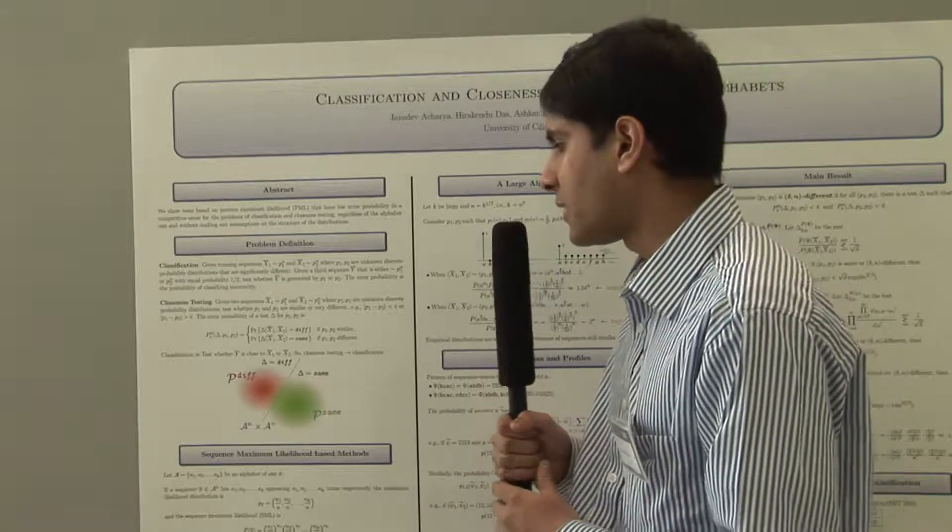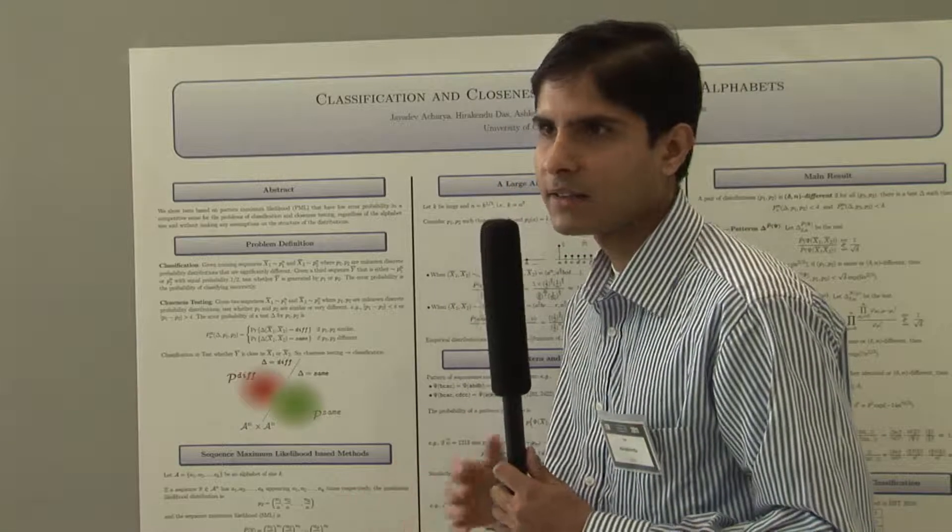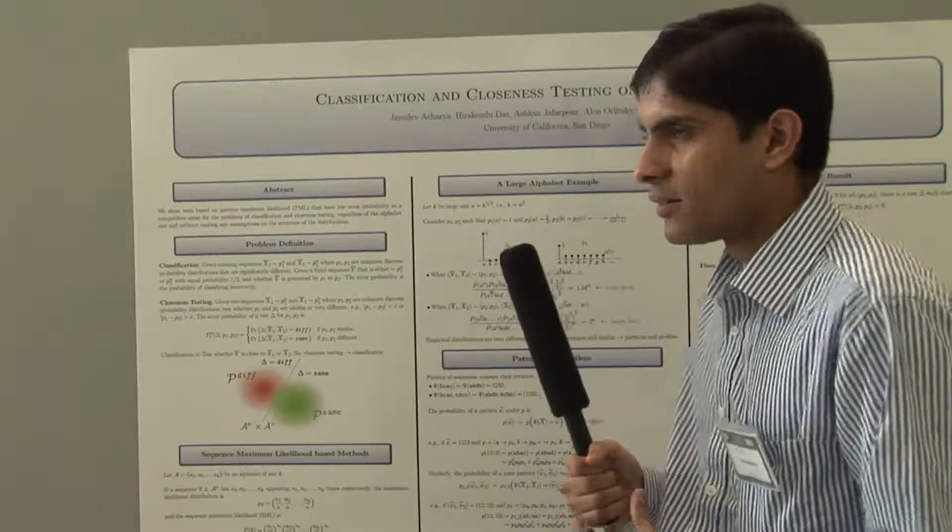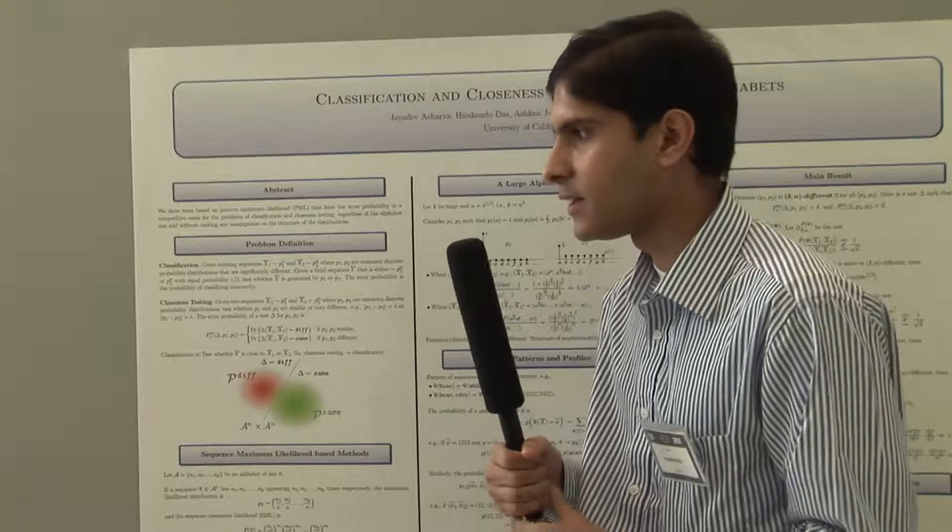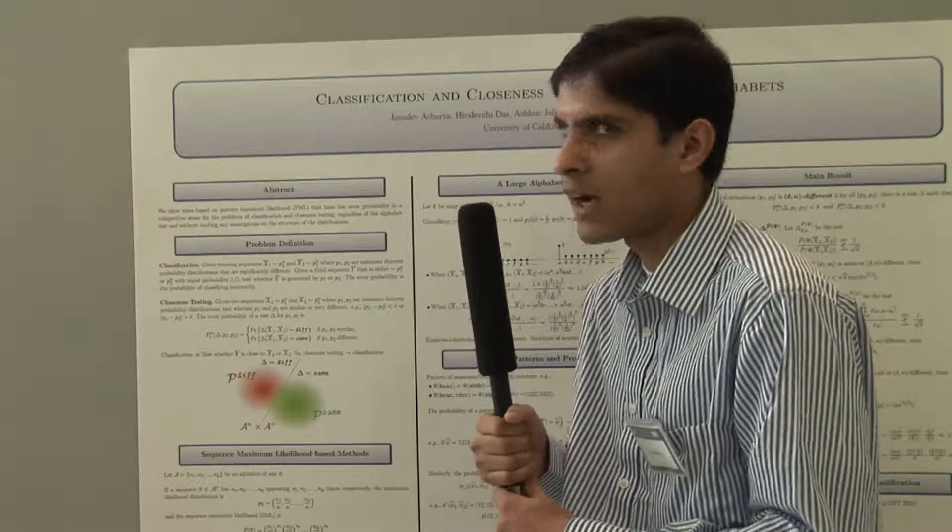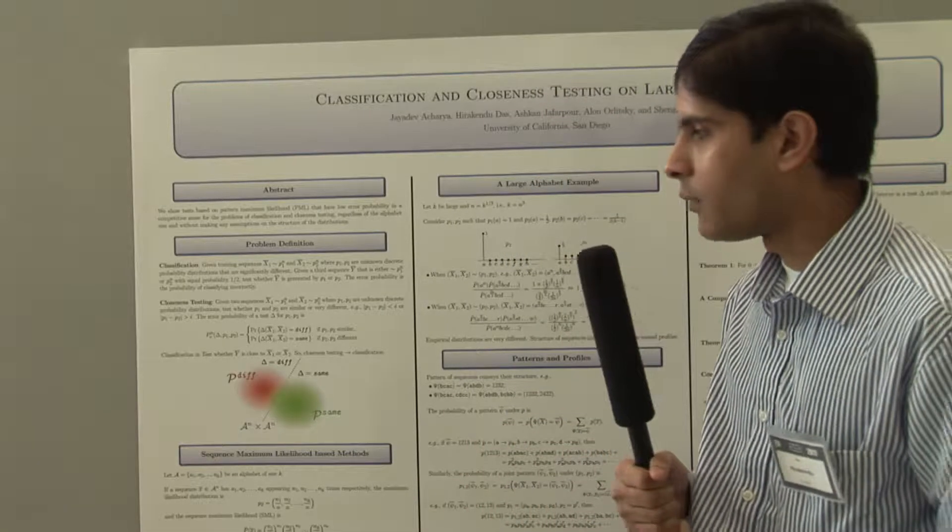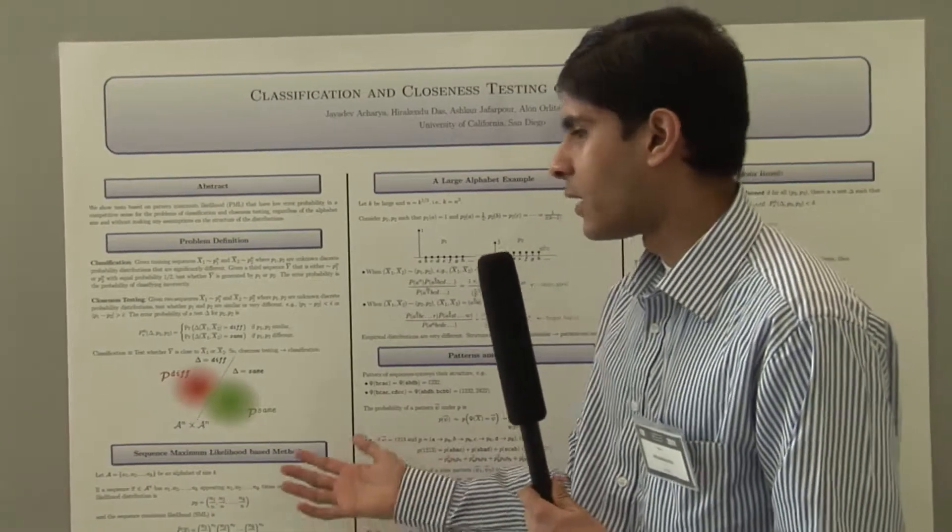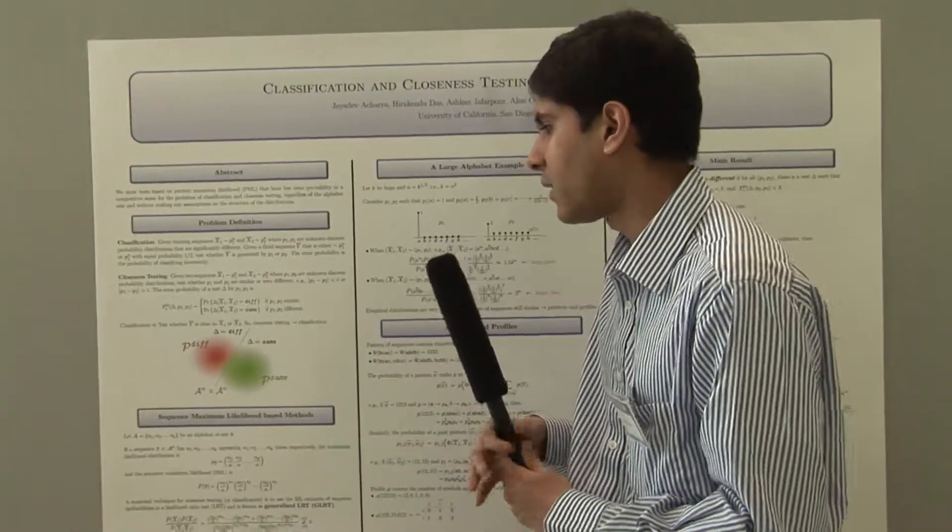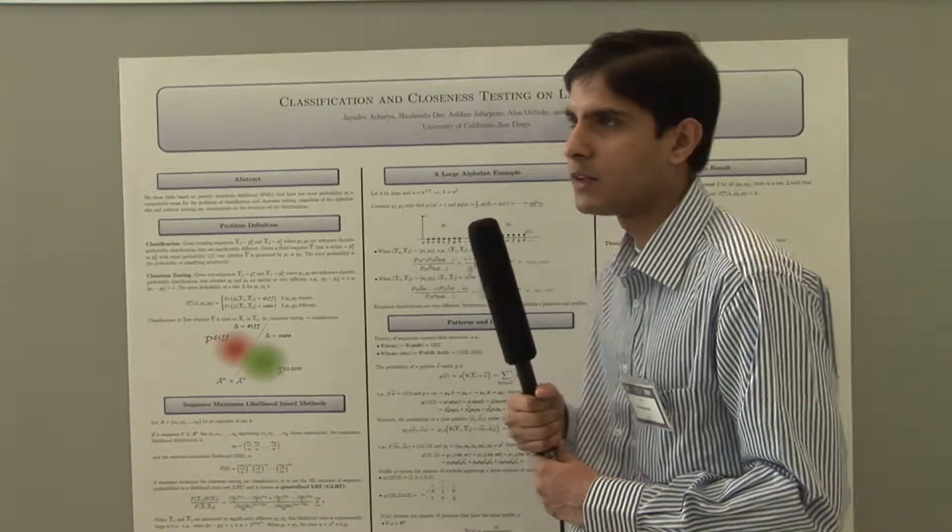The problem is fairly simple when the alphabet size is small. For example, if it's a binary alphabet, let's say it's a set of coin tosses, it's easy to say whether it's a fair coin or a biased coin. But the problem is more complicated when the alphabet size is large. There the counts of various symbols are not really representative of the distribution.